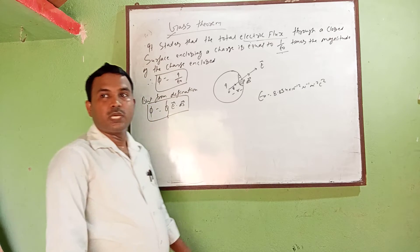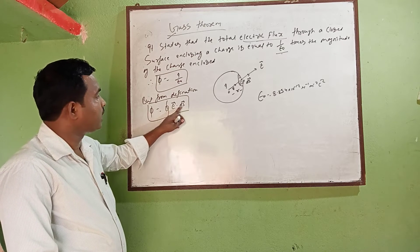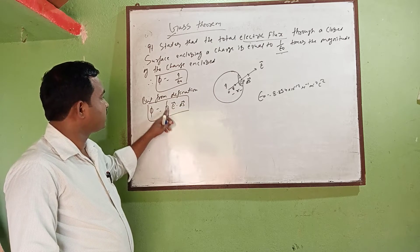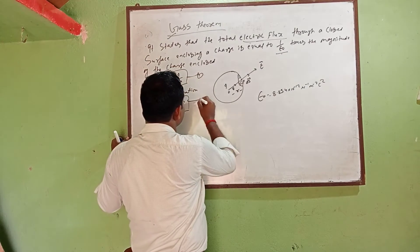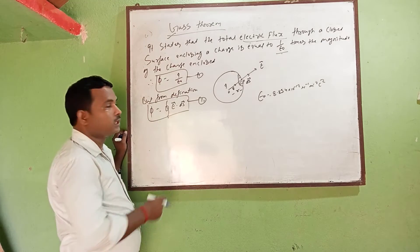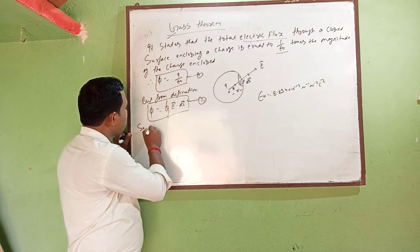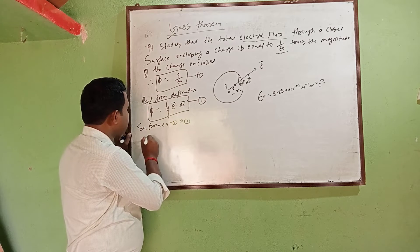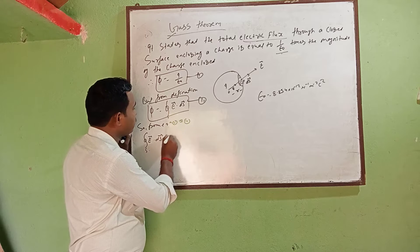According to definition we can also write phi is equal to the closed integral of E dot DS, where E is the electric field and DS is the elementary portion of the closed surface. Assuming equation one and equation two, both have the same LHS, so from equations one and two: closed integral over S of E dot DS equals Q by epsilon naught.